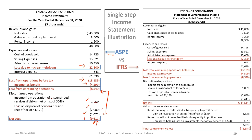On the IFRS side, everything is exactly the same up to the net loss, with the same nuclear meltdown change and resulting figures. The OCI section is the same as previously identified, but this time our total comprehensive loss is $8,354,000.